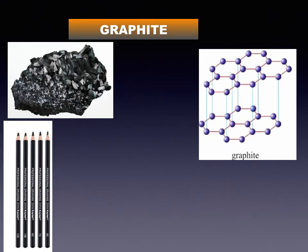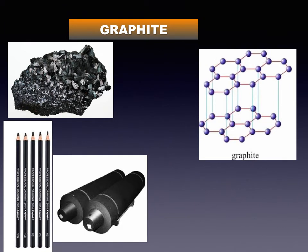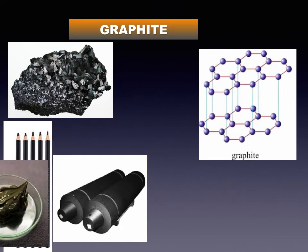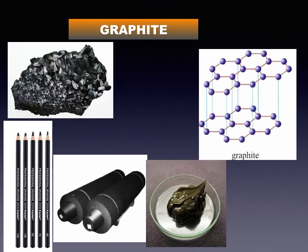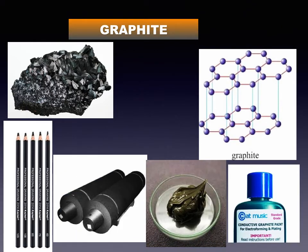The different uses of graphite: graphite is used for making lubricants; graphite is used for making carbon electrodes; graphite is used in pencils for writing; graphite is used in paints and polish; and graphite is used in arc lamps, which give a very bright light.